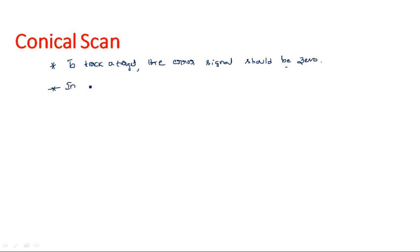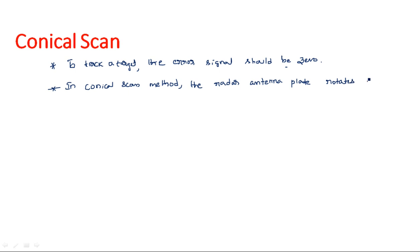In the conical scan method, the radar antenna plate rotates in the shape of a cone — that's why it is called the conical scan method. Scanning means identifying the target, so in order to identify the target, the antenna plate rotates in a conical shape. Once the target is identified, the next step begins.